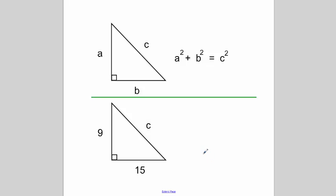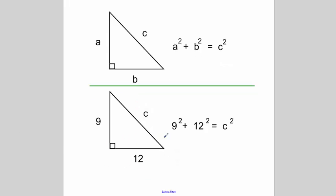And we've looked at that before. If you've got a triangle where you know the two short sides, in this case 9 and 12, then we can write 9 squared plus 12 squared equals c squared.